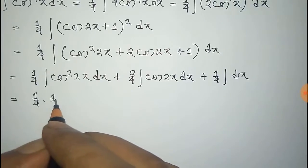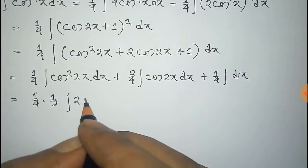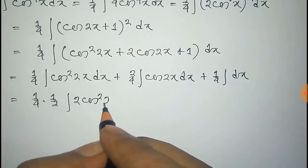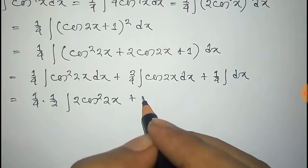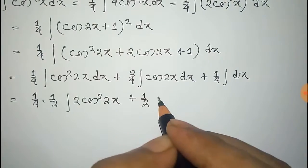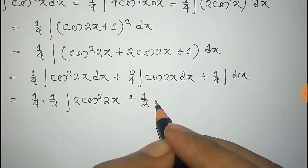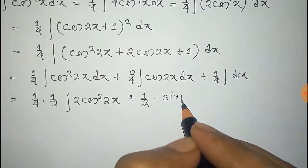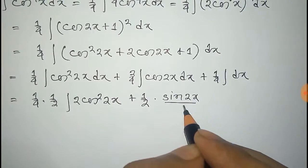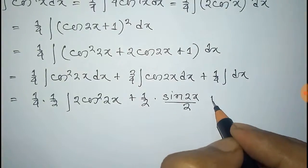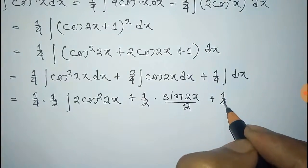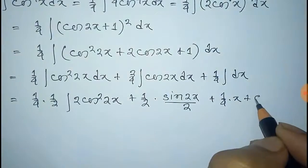Now taking one half common we get one fourth times one half integral of 2 cos square 2x plus 1 half. The integration of cos 2x is sin 2x by 2 plus the integration of dx is x plus the constant c.